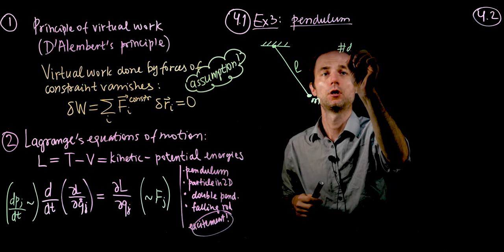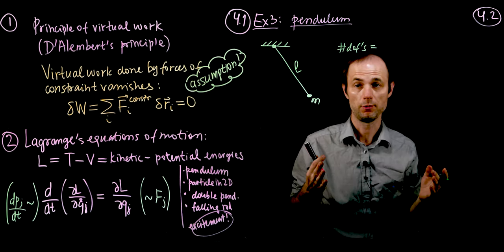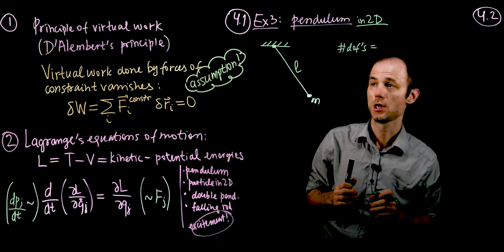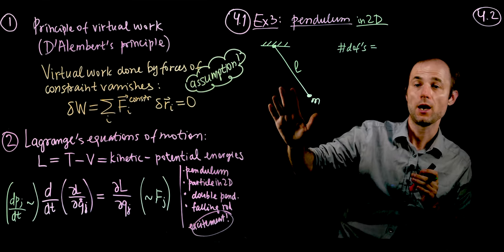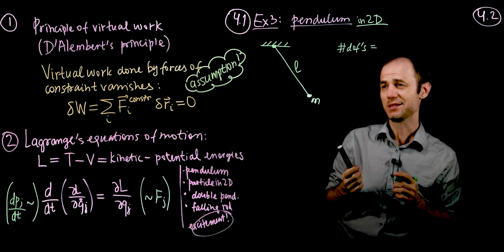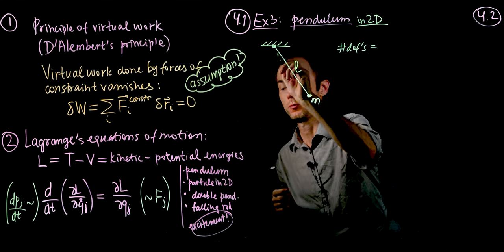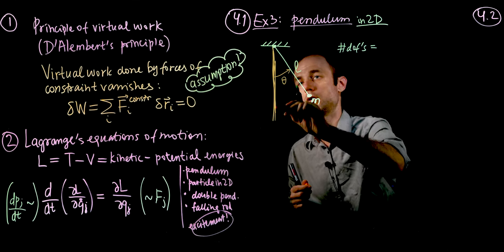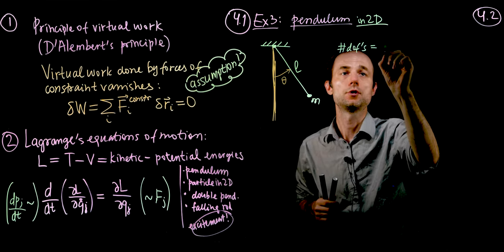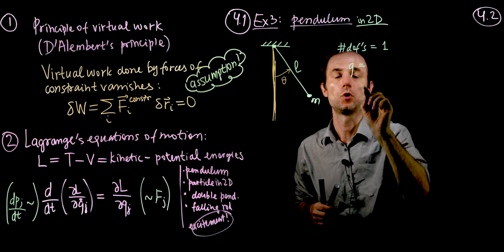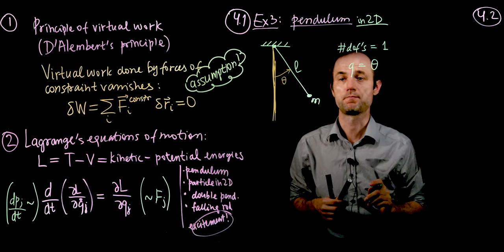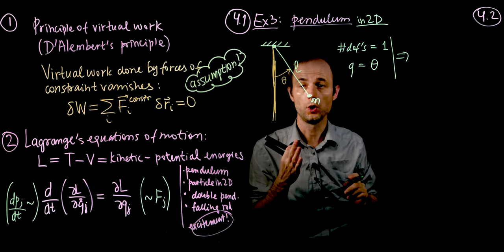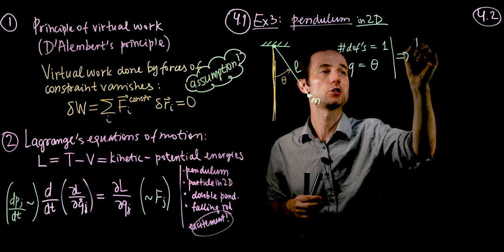The pendulum we're going to consider is a very simple one: a mass M attached to a rod of length L. Let's start with the usual algorithm. First, the number of degrees of freedom: it's a two-dimensional pendulum that can only oscillate back and forth in the plane of the board. We can describe it with just one parameter — the angle theta from the vertical. So the number of degrees of freedom is 1, and our generalized coordinate is theta.